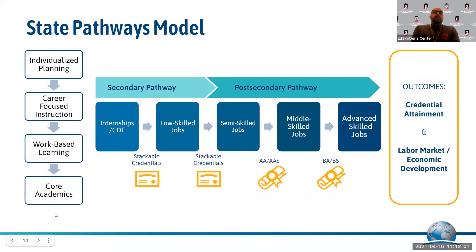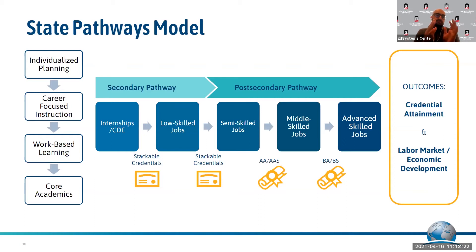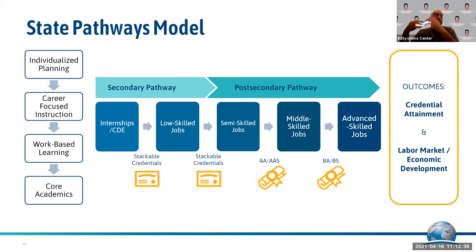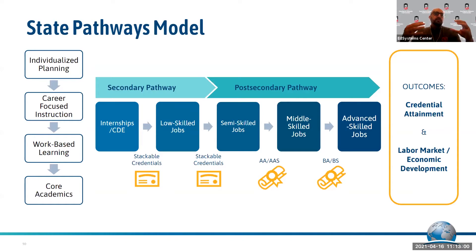What you're seeing on screen is what we at Ed Systems like to call a 'coalescing state pathways model.' There's a lot of variance in programs of study being implemented locally, but state agencies and stakeholders at secondary and post-secondary levels are coalescing around a framework where a pathway includes individualized student planning, a unique focus on career-focused coursework — both CTE-funded and other courses — an emphasis on work-based learning, and attention to core academic subject areas like English, math, science, and social science complementing career-focused instruction.